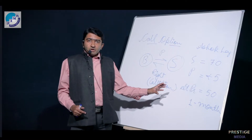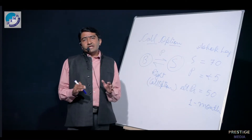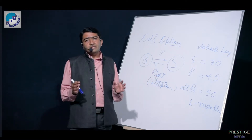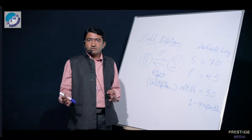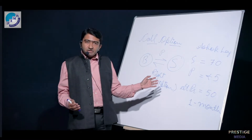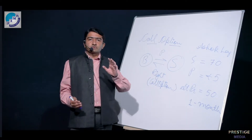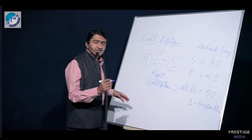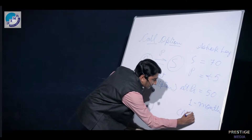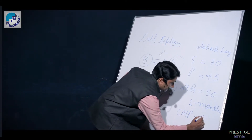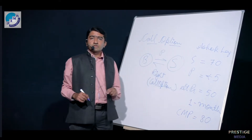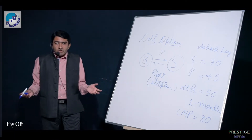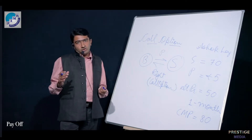We are talking about this call option expiring in one month — a January option expiring on the last Thursday of January, hypothetically on 25th January. On 25th January, say the settlement price or current market price becomes Rs. 80. How would the payoff be calculated? Payoff is profit or loss.